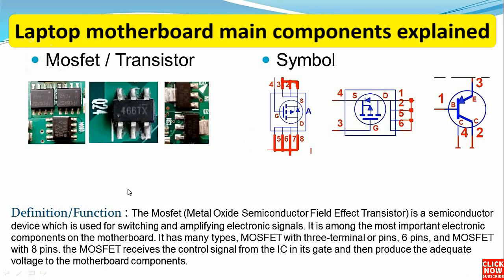The next component is MOSFETs and transistors — among the most important components in every circuit and electronic device. You can find MOSFETs with three terminals, four terminals, six terminals, or even eight terminals, as you can see in the pictures. As a definition, the MOSFET — metal oxide semiconductor field effect transistor — is a semiconductor device used for switching and amplifying electronic signals. MOSFETs come in types with three, six, or eight pins. The MOSFET receives the control signal from the battery IC or gate IC, then produces the adequate voltage to the motherboard components.